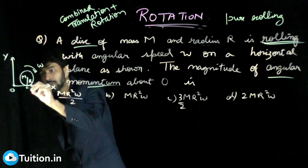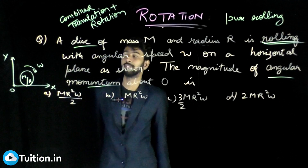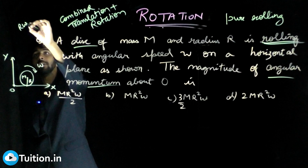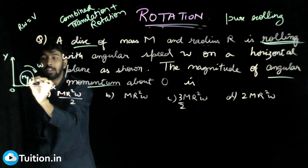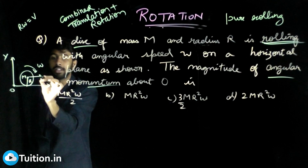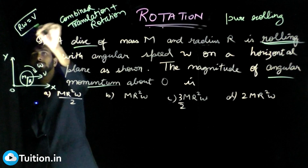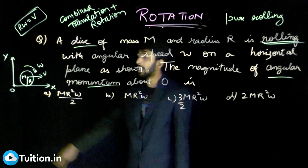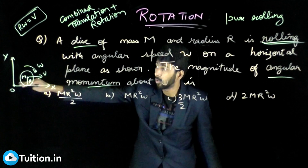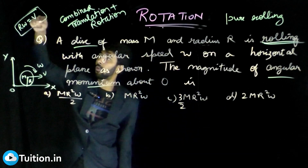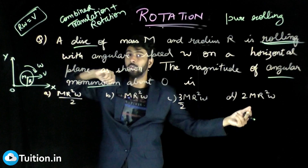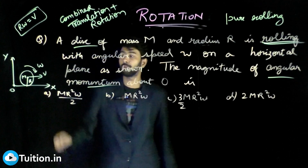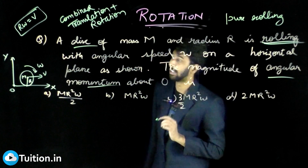That means the bottom-most point is at rest with respect to the surface. That can happen only when r·omega equals v — the velocity with which the disk is moving. Only then the bottom-most point will be at rest. Because the ground is at rest, v minus r·omega should equal zero. That is the case of pure rolling.